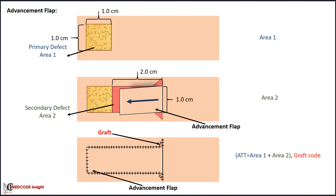In some cases, the flap donor site is only partially closed, and the remaining defect requires a graft, which may be a split-thickness or free skin graft. In scenarios where a graft is used to close the defect that is not closed by the adjacent tissue transfer, it is considered an additional procedure and coded separately.